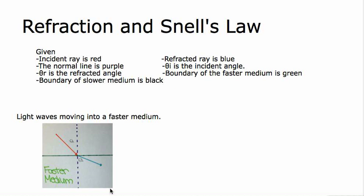In the diagram, light waves are moving into a faster medium. The red incident ray goes through the boundary, which is green, and then becomes a blue refracted ray, bending away from the line of normal, which is purple. The refracted angle becomes larger than the incident angle.